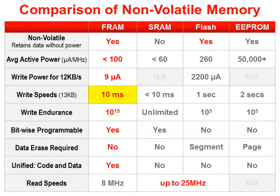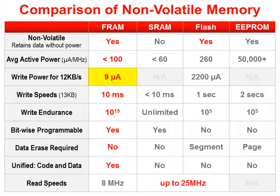We've even seen folks choose FRAM-based devices because it speeds up their production lines — they find themselves spending a lot less time per unit burning firmware into their microcontrollers. And if you want to do firmware updates wirelessly to a remote system, the low-power writes are critical to making batteries last a long time. On the other hand, the big benefit for flash is that you can read it up to the full speed of our fastest MSP430 devices.